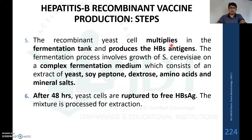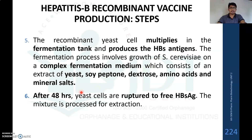The recombinant yeast cells multiply in the fermentation tank and produce HBsAg. The fermentation process involves the growth of Saccharomyces cerevisiae on a complex fermentation medium consisting of yeast, soya peptone, dextrose, amino acids, and minerals. After 48 hours of fermentation, the yeast cells are ruptured to free the HBsAg, and the mixture is processed for extraction.